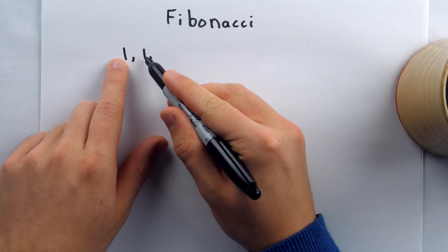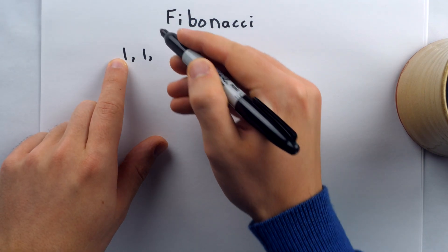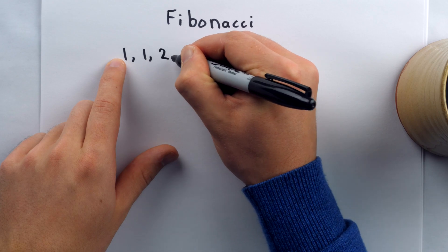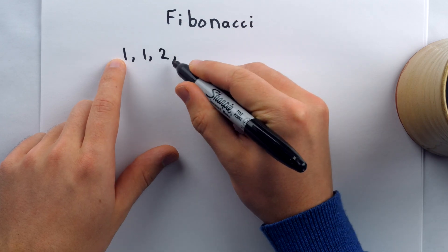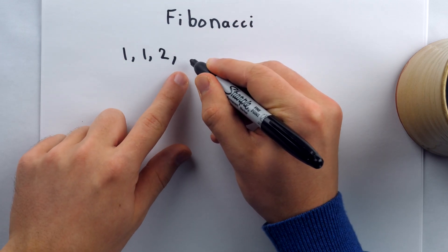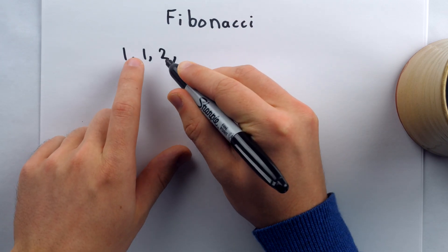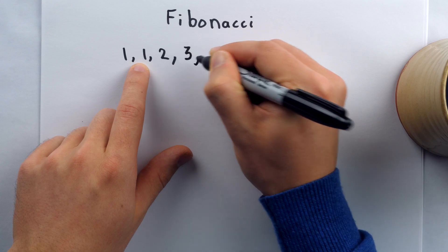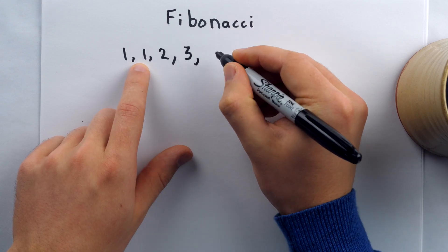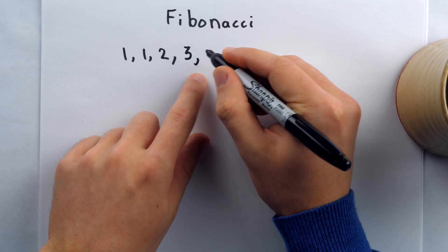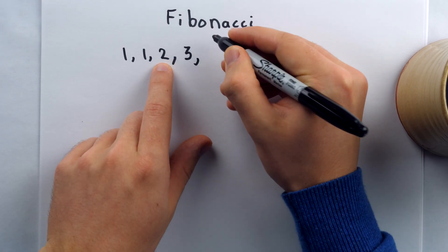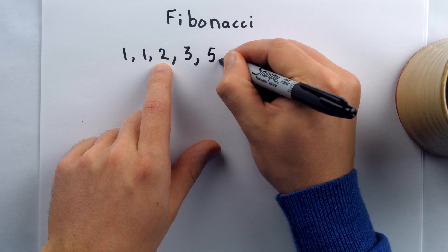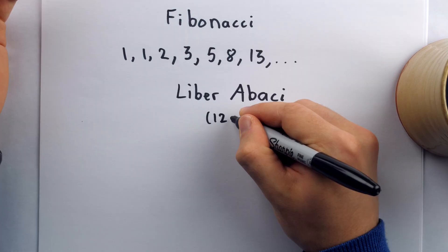To get the third term, we add the previous two terms: one plus one gives us two. To get the next term, we add the previous two terms: two plus one is three. To get the next term, we add the previous two terms: two plus three is five, and so on.